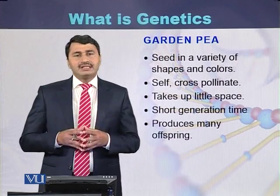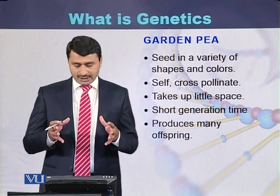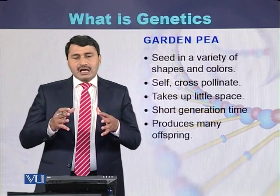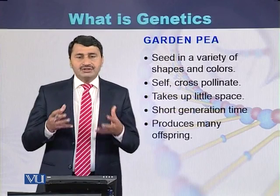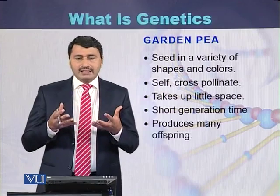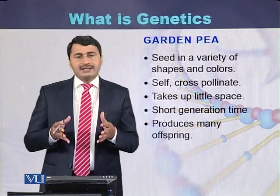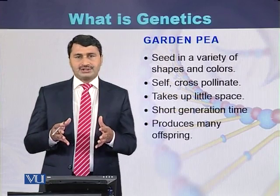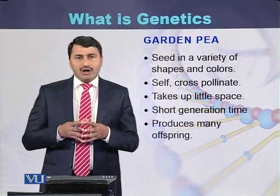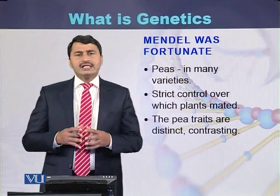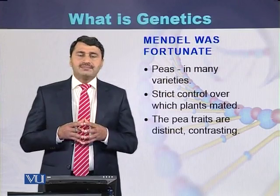The garden pea seed is available in many varieties. This plant self-pollinates as well as cross-pollinates. It takes little space to grow, has a short generation time of two to three months, and produces many offspring at a time. These characteristics helped Mendel in performing his experiments and formulating his laws. Mendel was fortunate because the garden pea was available in many varieties.